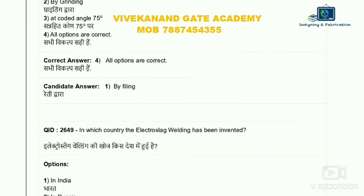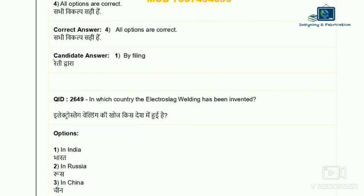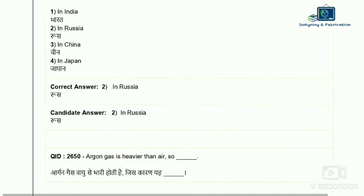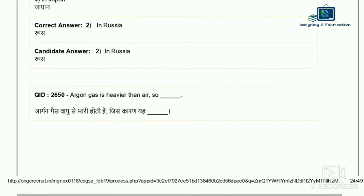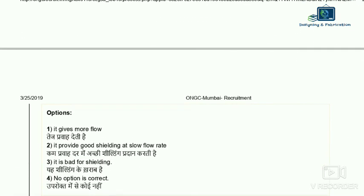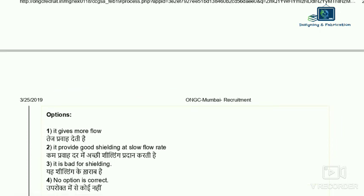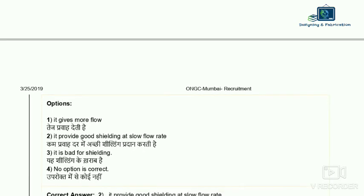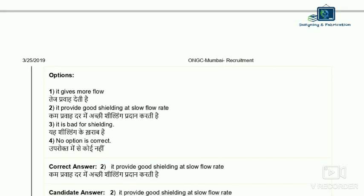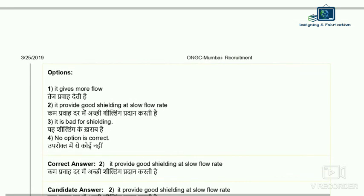Question 49: in which country was electroslag welding invented? Options are India, Russia, China, and Japan. Russia first invented and developed the electroslag welding process. So the correct answer is Russia — option two. Question 50: argon gas is heavier than air — what benefit does this provide? It provides good shielding at a slow flow rate. Argon, compared to helium, gives proper shielding even at lower flow. So the correct answer is it provides good shielding at slow flow rate.